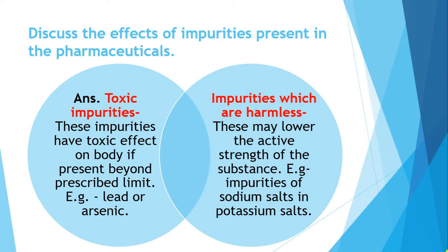Some impurities may be toxic and some may not be toxic. Impurities which are harmless — what they do is, since there is an active constituent or active drug present, these harmless impurities lower the active strength of the substance, that is the active strength of the API.